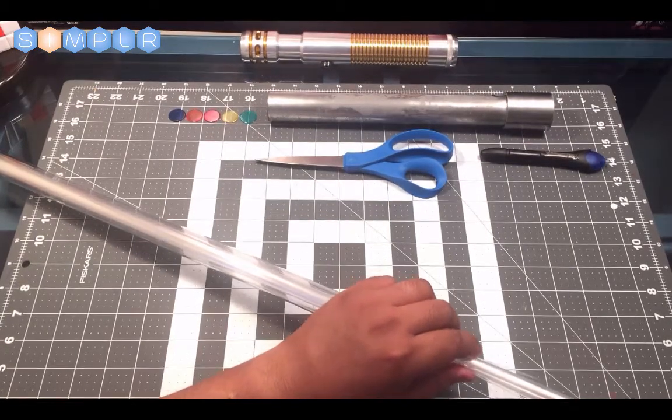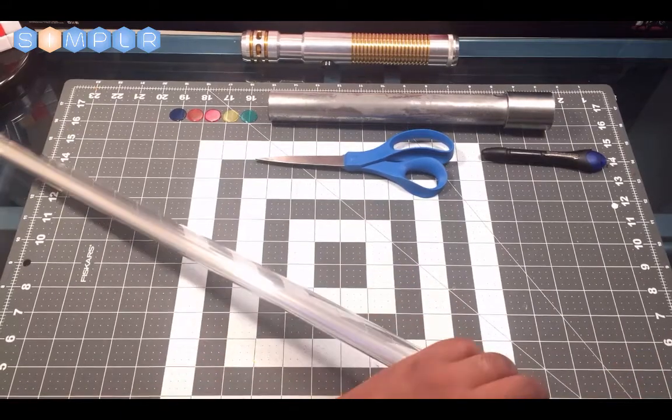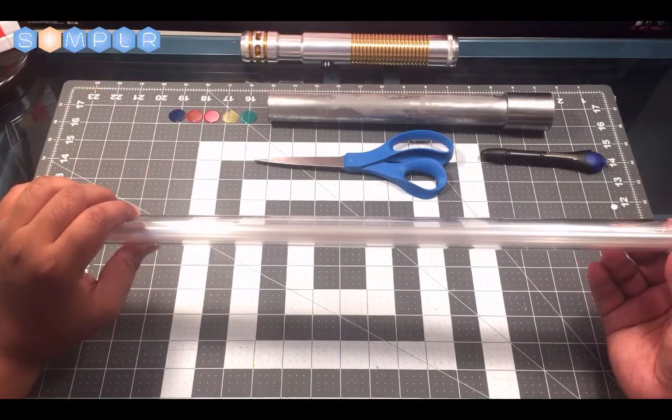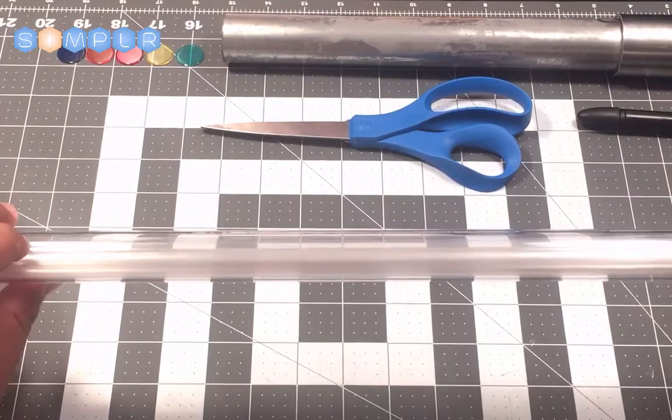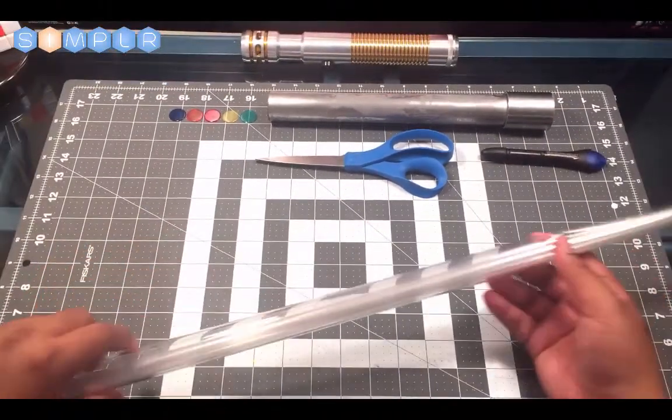Set that aside. Now what we have, if you see, the cellophane has a smaller diameter than the tube diameter, so it looks somewhat weird, but we'll fix that.